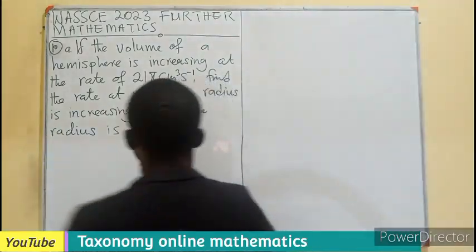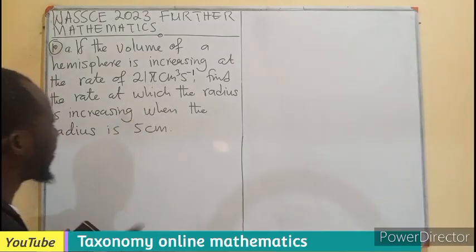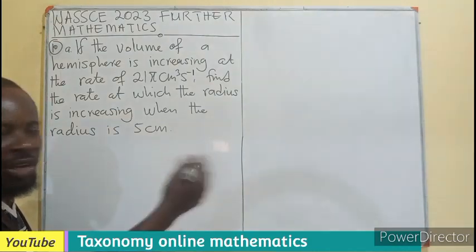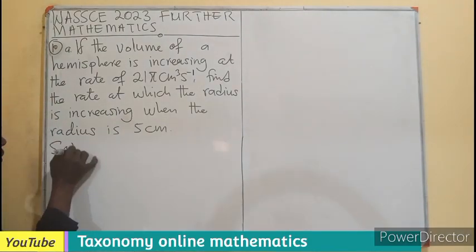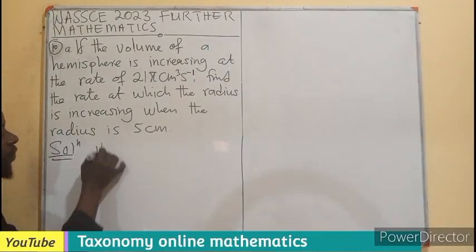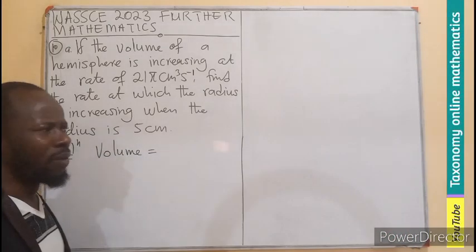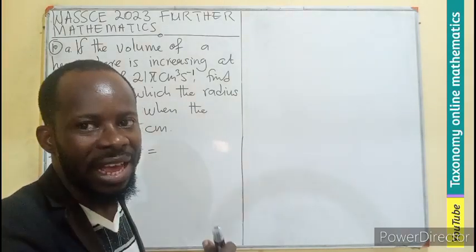In this case, let's begin with the volume of a hemisphere, which is the first parameter that is changing. So we know the volume of a hemisphere. Don't forget, the hemisphere is half of a sphere.